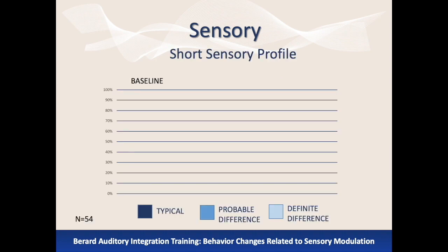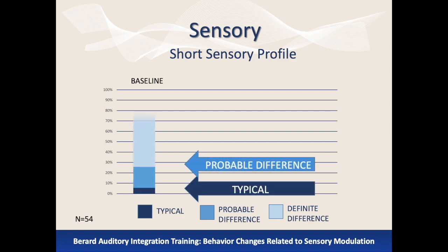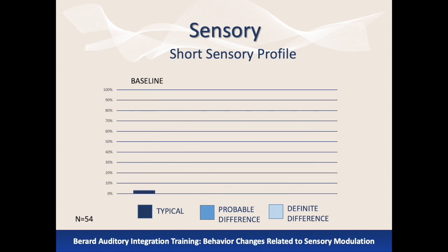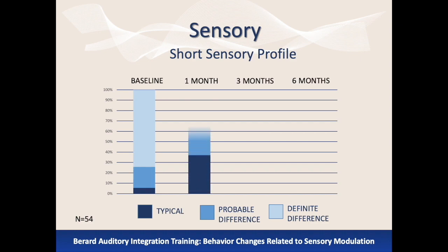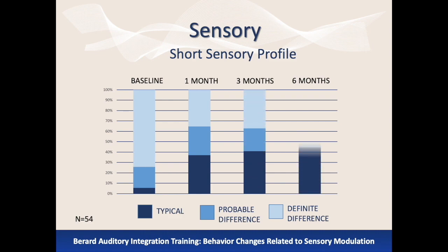54 subjects were identified as either exhibiting typical performance, a probable difference, or a definite difference in these responses. Before Berard AIT, a very small percentage of the subjects were in the typical range, and the majority exhibited a definite difference in sensory responses. After one month, we see improved abilities in these sensory modulation components, and these changes were maintained through the one-, three-, and six-month post-testing.